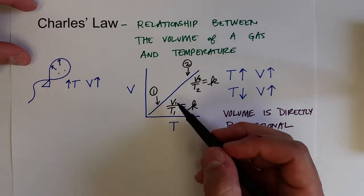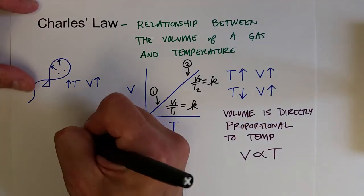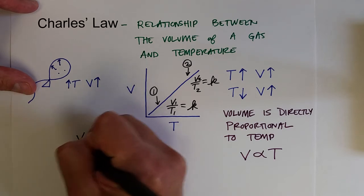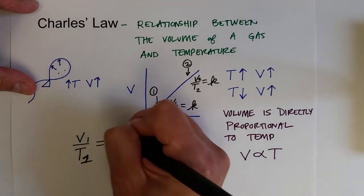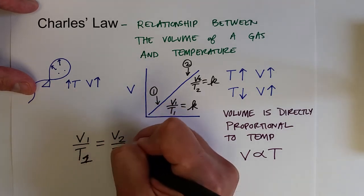And so, since both of these values equal the same constant, they are also equal to each other. And so we can say V1 over T1 equals V2 over T2.